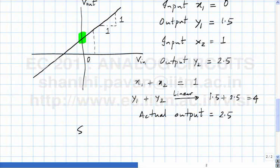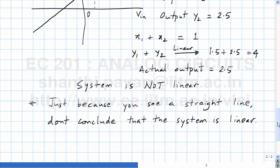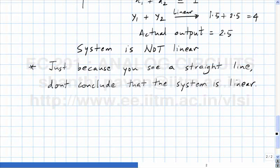Summary of the discussion is that just because you see a straight line, don't conclude that the system is linear. Clearly, this example has shown you that. One necessary condition for the system to be linear is when the input is 0, the output must be 0 for the system to be linear.